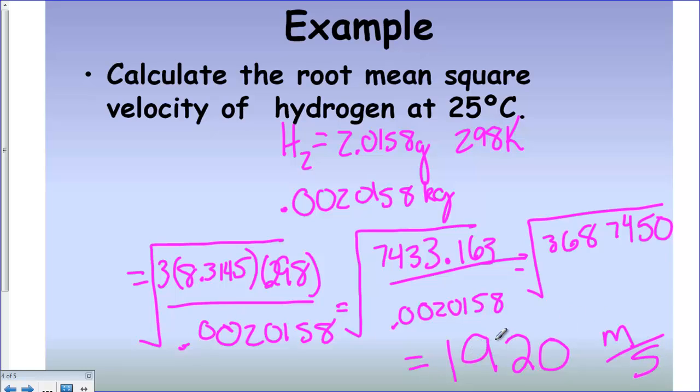That's a lot faster than the CO2 molecule at the same temperature. The CO2 molecule only goes 410 meters per second, whereas the hydrogen molecule is going 1920 meters per second, and they're at the same temperature. Now, they have the same kinetic energy, but they have a different velocity because they have a different mass.